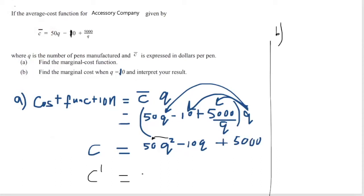So for the marginal cost, I'll have 50Q squared, so 2 times 50 is 100. And subtract 1 from the power, so I'm left with Q. Minus 10Q, differentiate that to get minus 10. And differentiating the constant gives 0. So C prime equals 100Q minus 10 represents the marginal cost function. And now we need to find the marginal cost when Q equals 10.